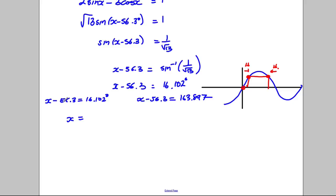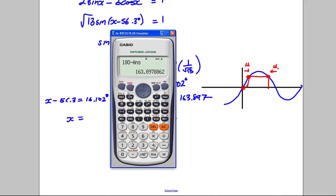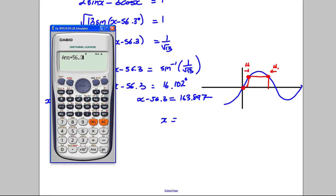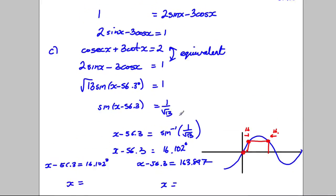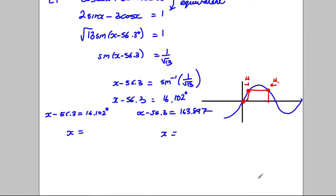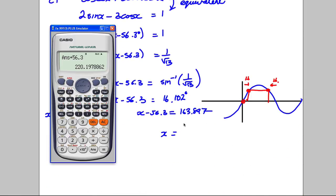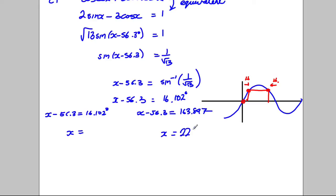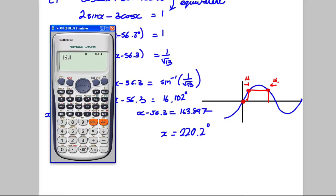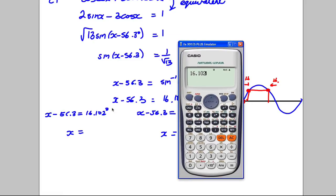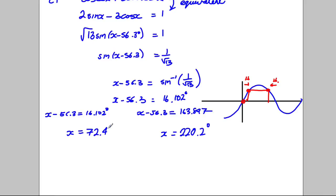So therefore x is this plus this and x is this plus this. I'm going to add on the 56.3 here and I get 220.197. So what did they say they wanted it to? To one decimal place. So 220.2 degrees. And over here we've got the 16.102, I'm going to add on the 56.3 and I get myself 72.4. So 72.4 degrees.